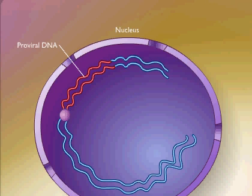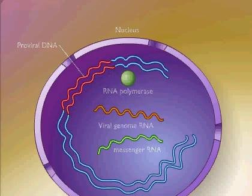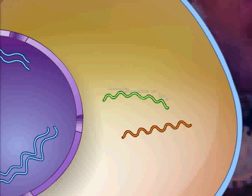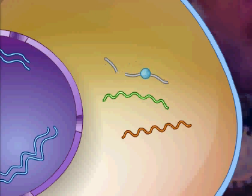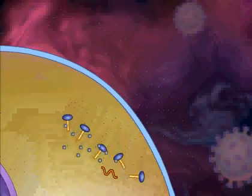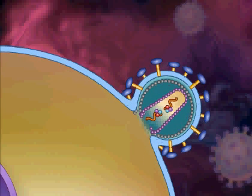Following integration, the proviral DNA may remain dormant or, with host cell activation, RNA may be synthesized from the DNA, yielding messenger RNA and viral genome RNA. Viral messenger RNA is translated, yielding viral enzymes and structural proteins. Some of the functional proteins are formed by cleavage of a long polyprotein by the enzyme protease. Protease inhibitors interfere with this step. GP41 and GP120 are inserted into the host cell membrane, and the structural proteins surround the viral RNA to form the core.